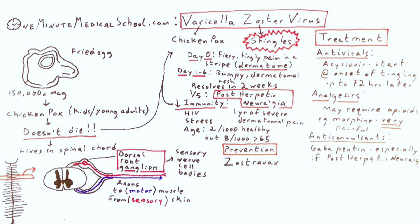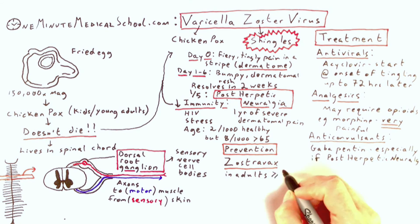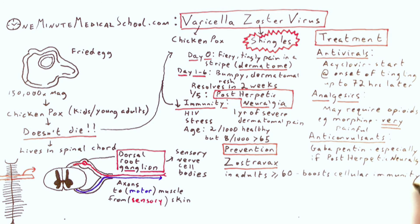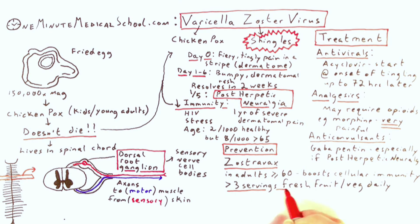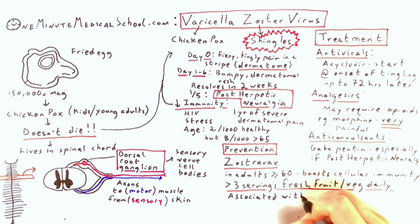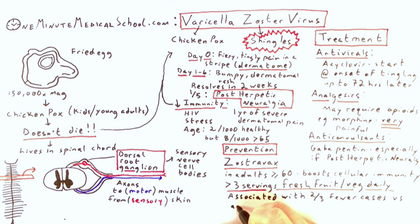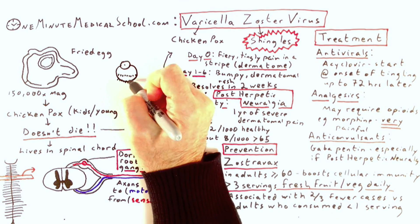For prevention, we recommend Zostavax in healthy adults over 60 to boost cellular immunity. More than three servings of fresh fruit or vegetables a day may also reduce your risk by two-thirds.